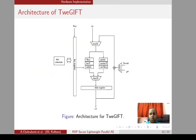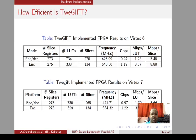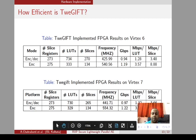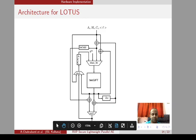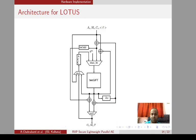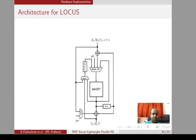We have also implemented the whole design on FPGA, including TweGIFT independently. The encryption-only architecture achieves a much better hardware area than the combined encryption-decryption implementation, and overall it achieves a better frequency and better throughput-area efficiency ratio. The architecture for LOTUS uses TweGIFT inside the LOTUS AE mode structure, and similarly for LOCUS using TweGIFT.